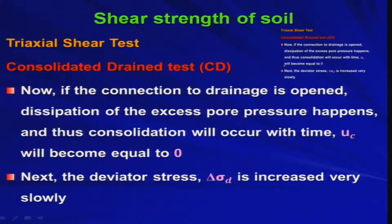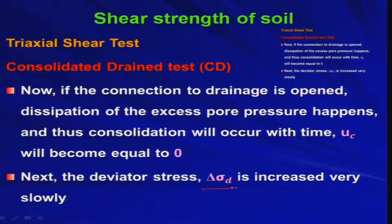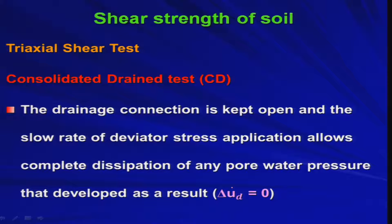If the connection to drainage is opened, dissipation of the excess pore water pressure happens and consolidation occurs with time, so u_c becomes equal to zero. The deviator stress delta_sigma_d is then increased very slowly and gradually while the drainage connection is kept open. The slow rate of deviator stress application allows complete dissipation of any pore water pressure that develops, so delta_u_d equals zero.